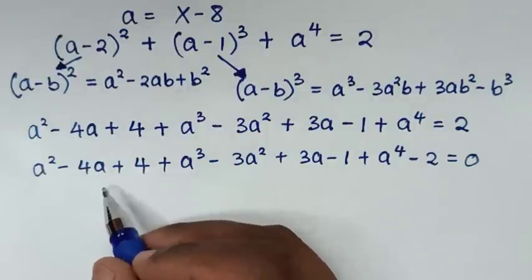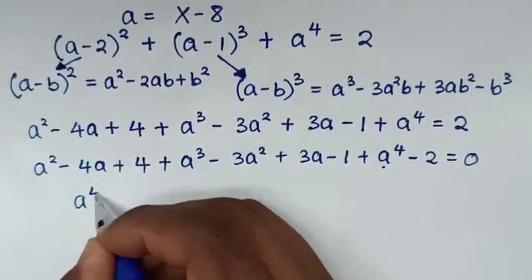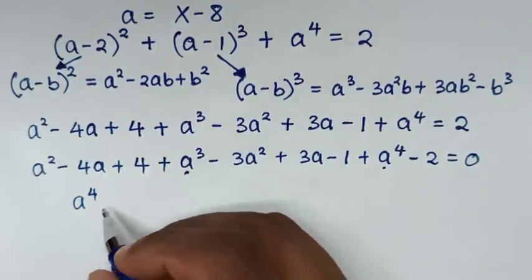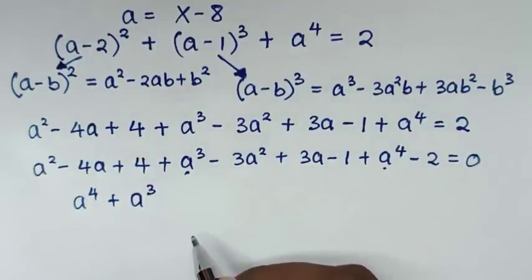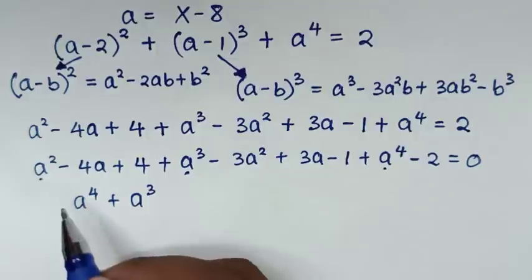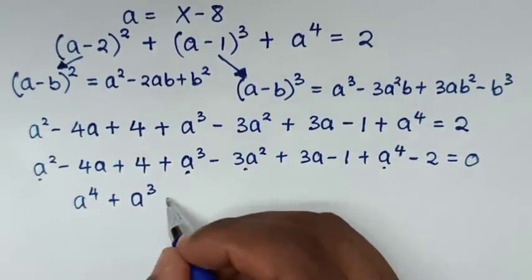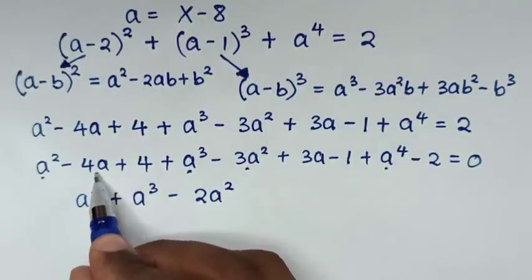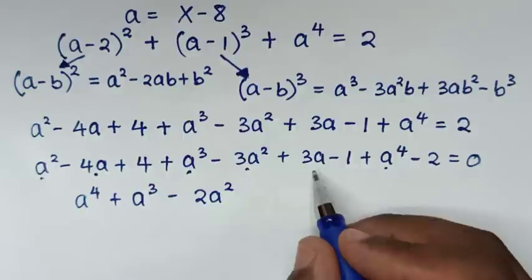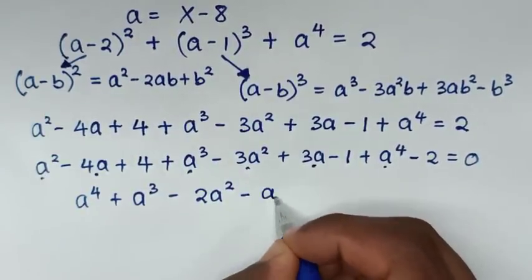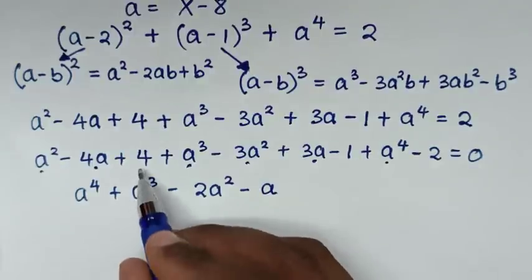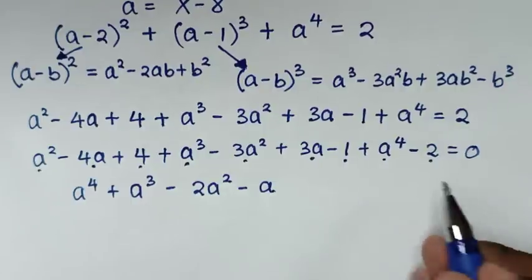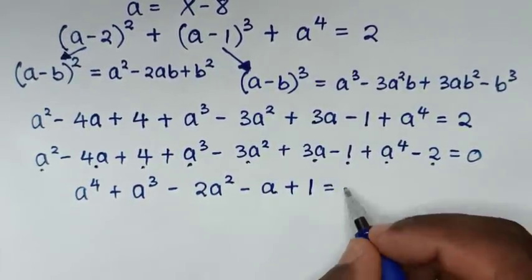We start with the highest power, which is a power of 4. Then with power of 3, we have only one term: plus a power of 3. With power of 2, we have a square minus 3a square which gives minus 2a square. With a, we have minus 4a plus 3a which gives minus a. And the constant: 4 minus 1 is 3, then 3 minus 2 is 1. So plus 1 equals 0.